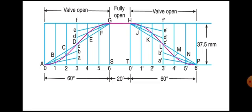Next, mark 20 degrees for the fully open dwell, then again 60 degrees for closing. So on the horizontal axis we have 6 cm, 2 cm, 6 cm representing 60°, 20°, and 60° respectively. Drop the horizontal line, then the vertical line. The stroke length is 37.5 mm, so the vertical height is 3.75 cm. Drop the vertical line and create the bounding box as usual.